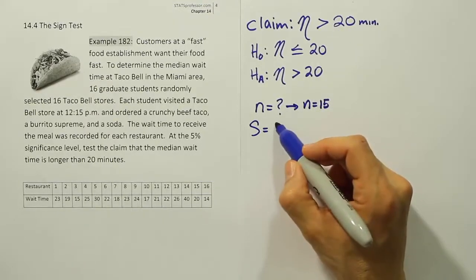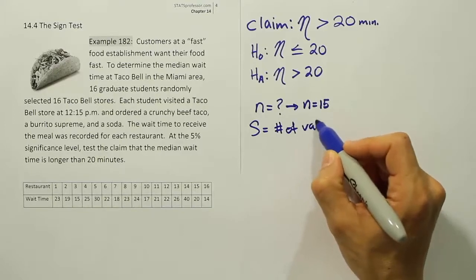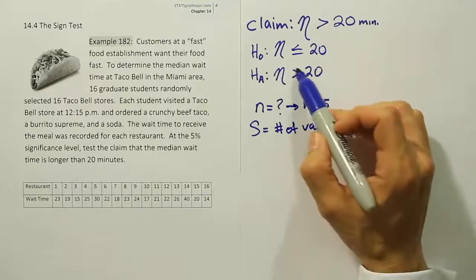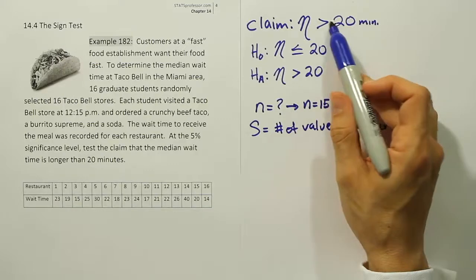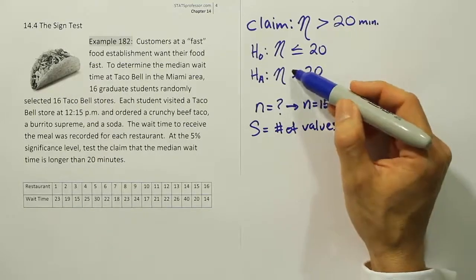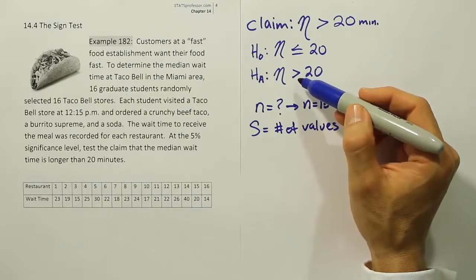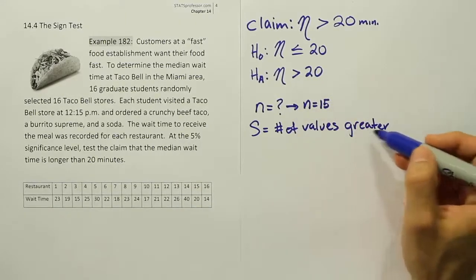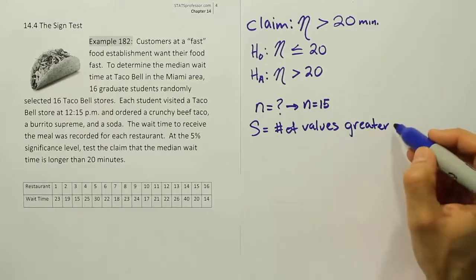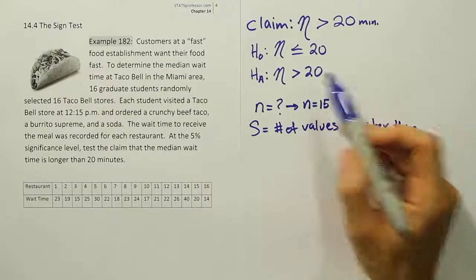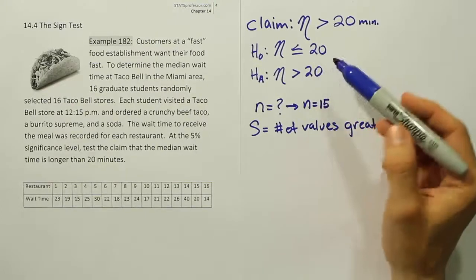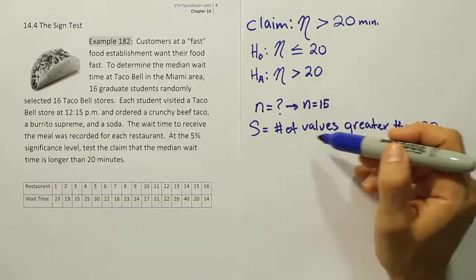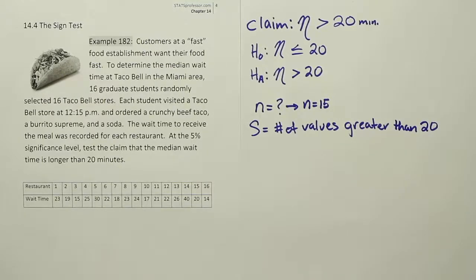For a right-tailed case, S is going to be the number of values greater than the hypothesized value. The greater than comes from the symbol in HA. If HA uses a greater than symbol, it indicates a right-tailed test. Because HA tells us it's right-tailed, we use that same idea in our test statistic. So S is the number of values greater than 20, which is the number in H0. S just counts how many values meet that criterion.